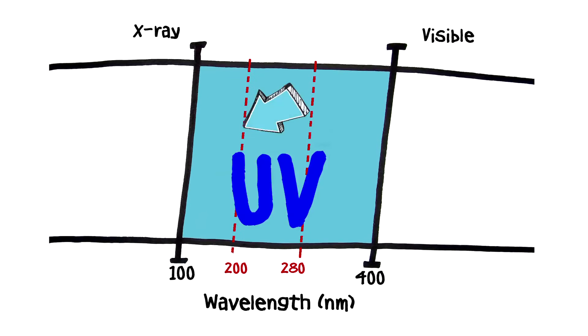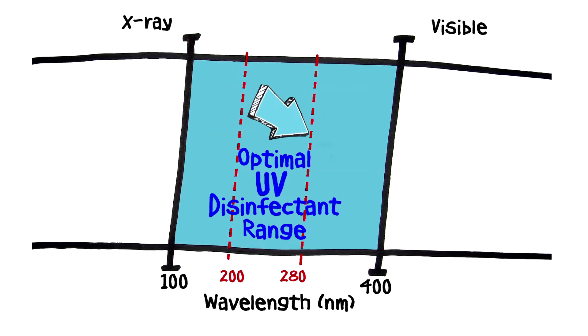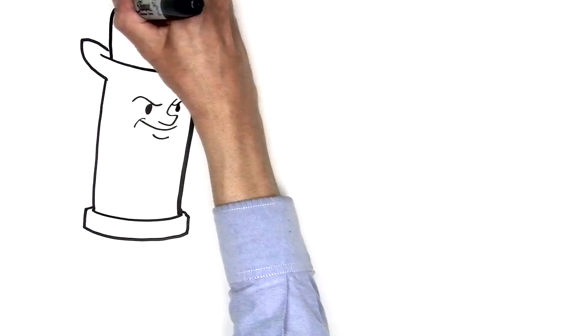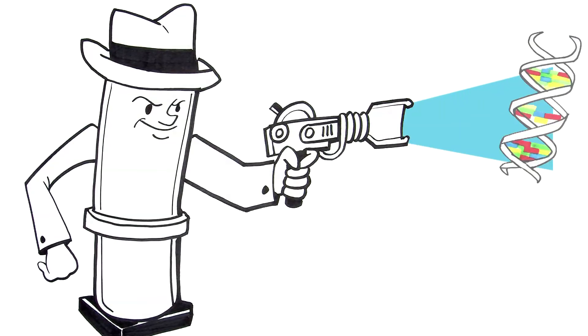UV is technically energy in the electromagnetic spectrum between X-ray and visible light. Like a silent killer, UV light can't be seen, but has powerful disinfecting properties.